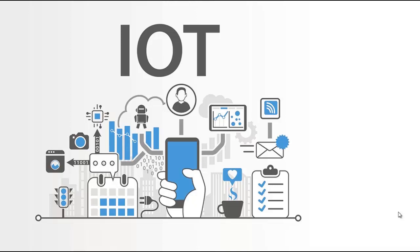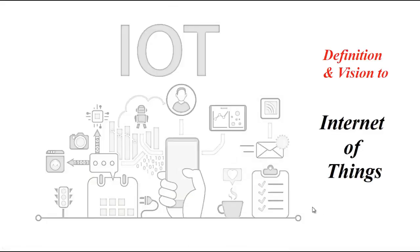Let's revisit the definition of IoT. We split it into 'Internet' and 'Things.' The internet is a vast global network of connected servers, computers, tablets, and mobiles governed by standard protocols. It enables sending, receiving, and communication of information, as well as connectivity with remote servers, clouds, and analytics platforms.